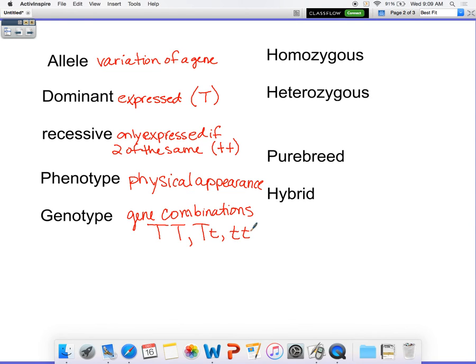We also have homozygous. Homozygous meaning same alleles. So that could be written as big T, big T, or little t, little t, because those are both the same alleles.